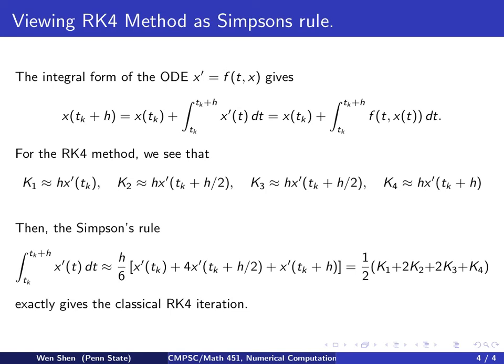And we see that this is actually exactly the classical Runge-Kutta fourth order iteration. Of course, this is just an argument trying to build connection between differential equation and numerical integration. A more rigorous proof will still have to use Taylor series, as we did for Hohen's method.